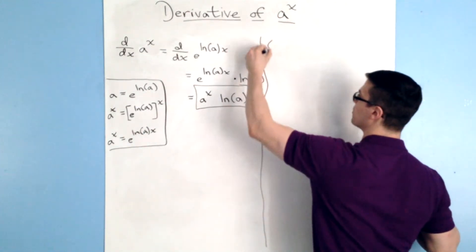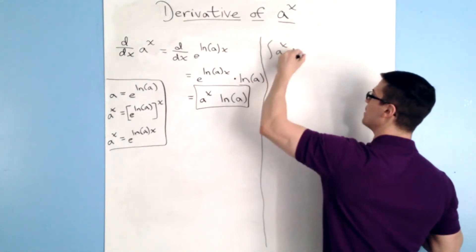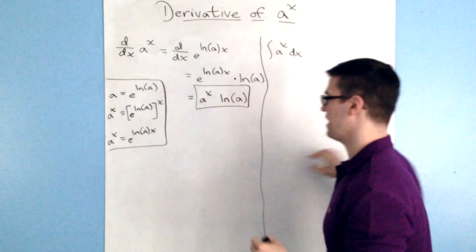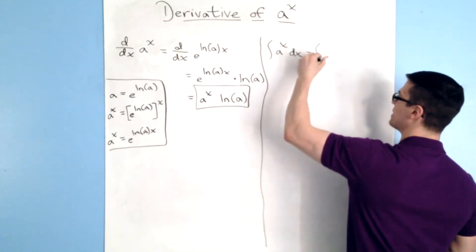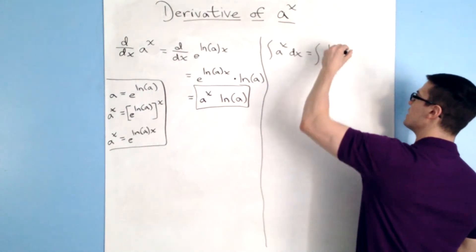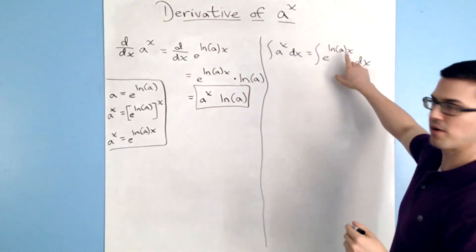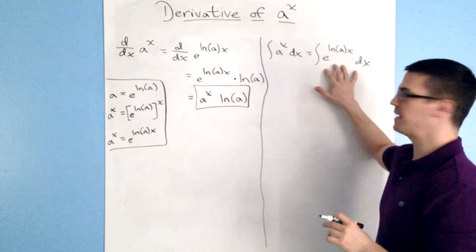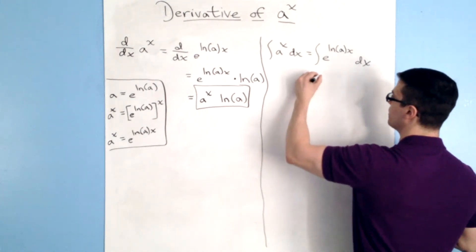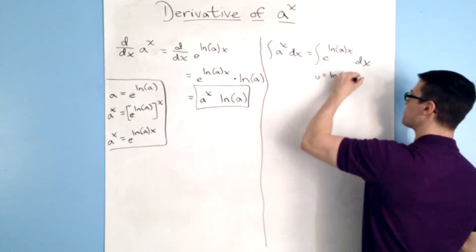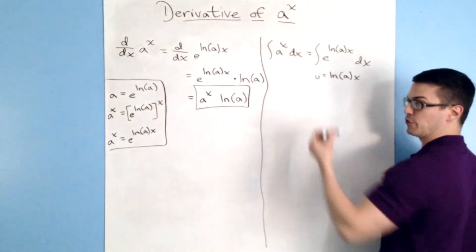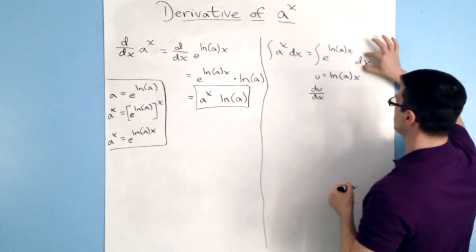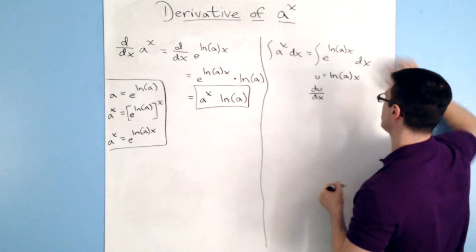The first thing I'm going to do is write that I'm looking for the anti-derivative of a to the x with respect to x. Once again, I'm going to substitute e to the ln a times x in for the a to the x power, so you'll end up with the integral of e to the ln a times x dx. What you should be noticing is this looks like a u-substitution problem, so I'm going to set u equal to ln a times x. That way it'll just be an integral of e to the u, which is pretty simple. Our du over dx — because we need to substitute for this dx.